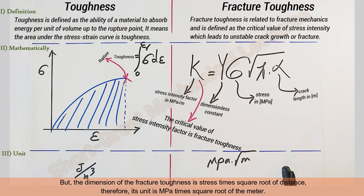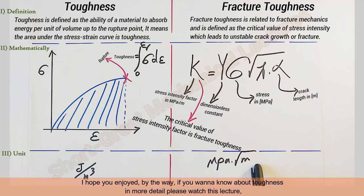But the dimension of fracture toughness is stress times square root of distance. Therefore, its unit is megapascal times square root of meter.